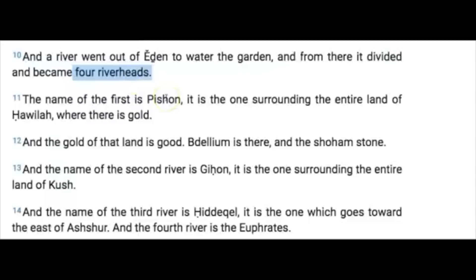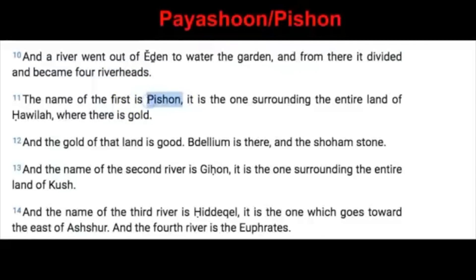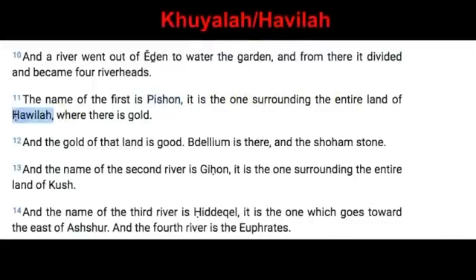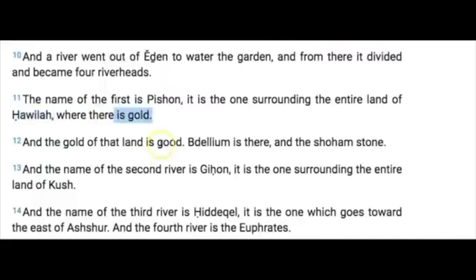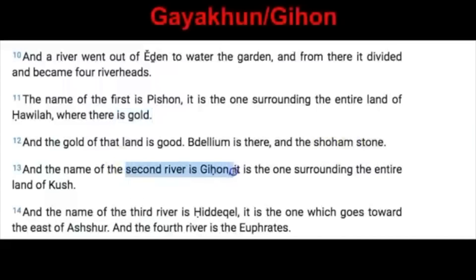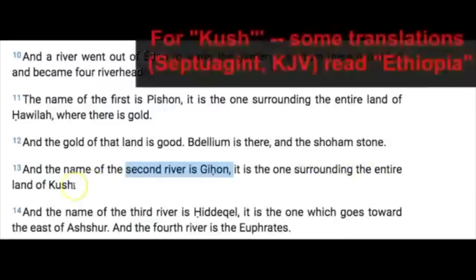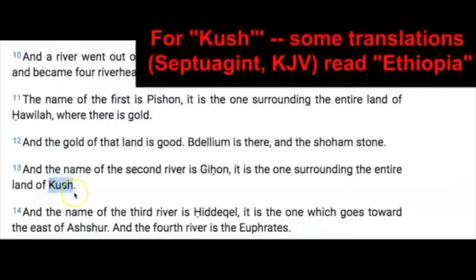Using the names in the ancient Yahudioth language: the name of the first is Payashun, commonly known as Pishon today. It is the one surrounding the entire land of Kuyala, commonly known as Havilah today, where there is gold. The gold of that land is good; Bedellium is there and the Shohem stone. The name of the second river is Gayakun or Gihon — it is the one surrounding the entire land of Cush. Some translations today read Ethiopia, and we're going to be talking about that when we go over this river.